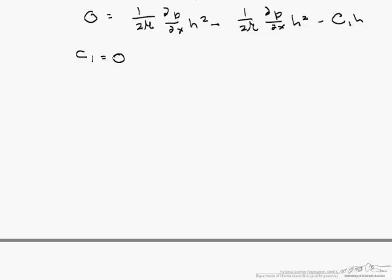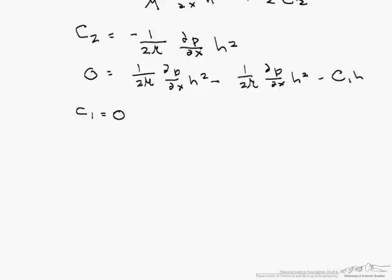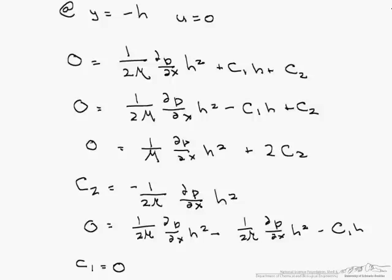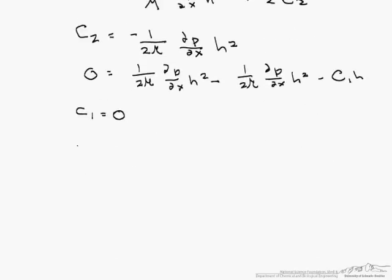So this is the way to solve for boundary conditions, and in the end we can rewrite our original equation, which is our u, by just replacing our c1 with 0 and our c2 with what we had calculated before. So let's write our final equation, u equals 1 over 2 times mu dp/dx times y squared minus